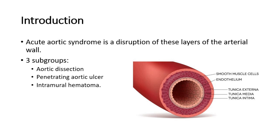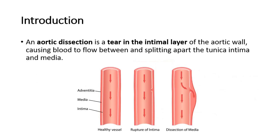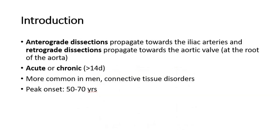An aortic dissection is a tear in the intimal layer of the aortic wall, causing blood to flow between and splitting apart the tunica intima and media. Anterograde dissections propagate towards the iliac arteries, and retrograde dissections propagate towards the aortic valve.